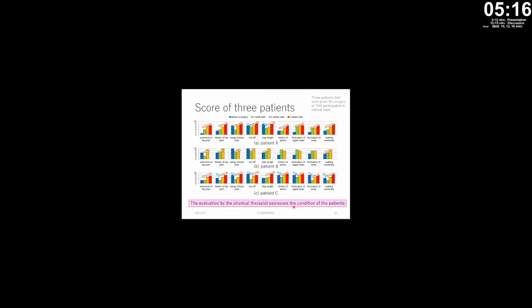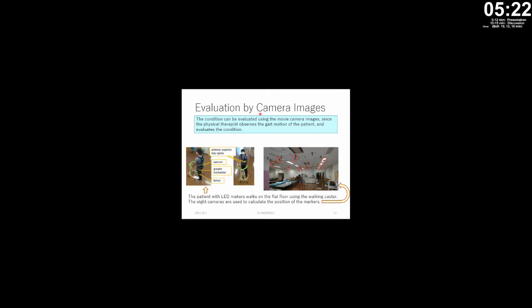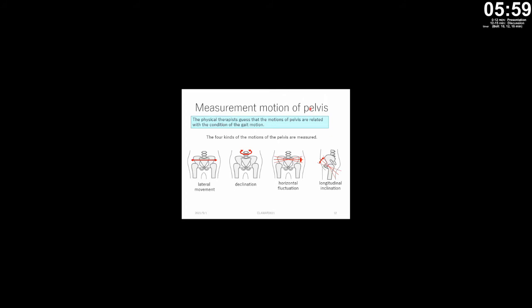Next, I show the evaluation by camera images. We think that the condition can be evaluated using movie camera images, because physical therapists observe the gait motion of the patient to evaluate the condition. The left figure shows the patient with LED markers walking on a flat floor using a walking caster. The right figure shows eight cameras used to calculate the position of the markers. We measure four kinds of pelvis motion: lateral movement, declination, horizontal fluctuation, and longitudinal inclination.